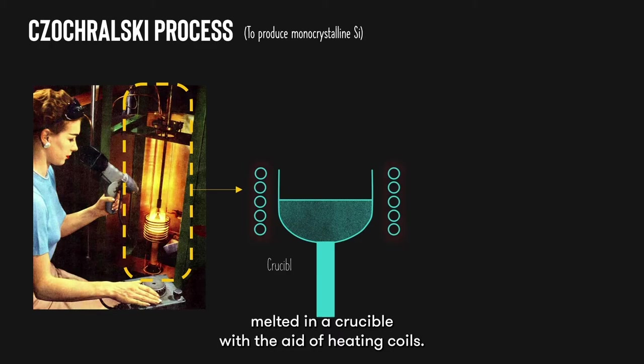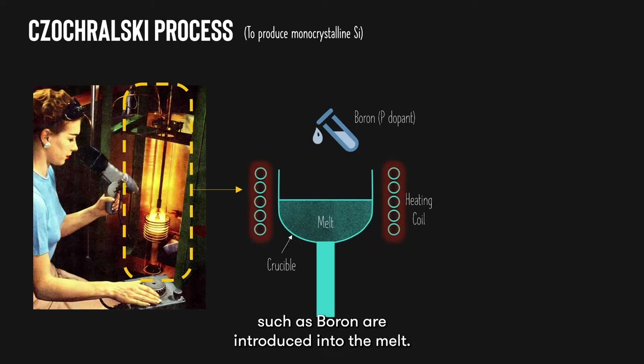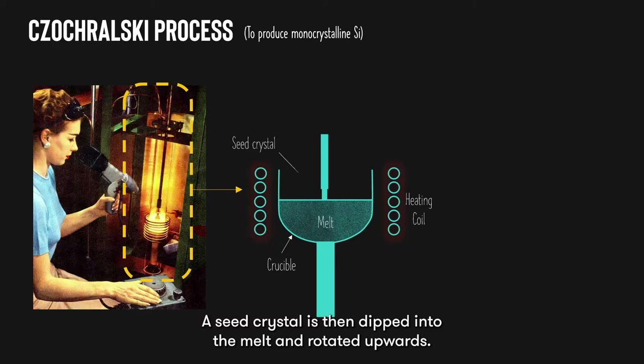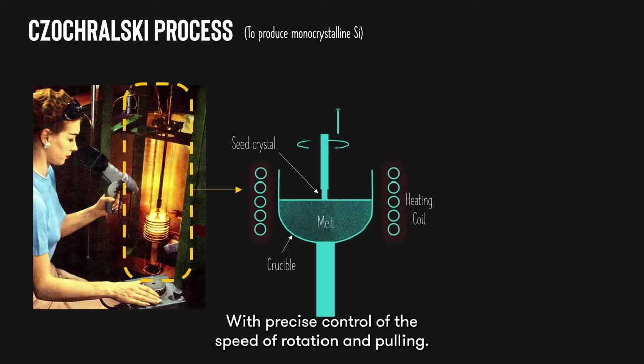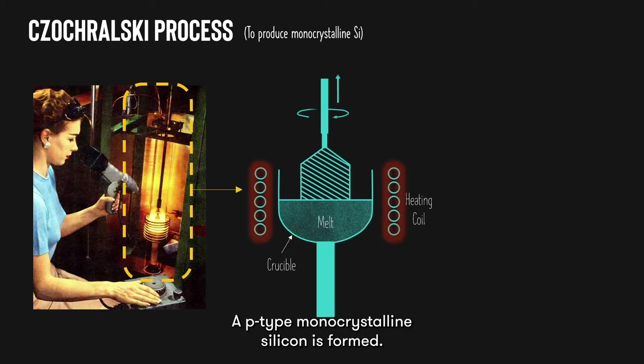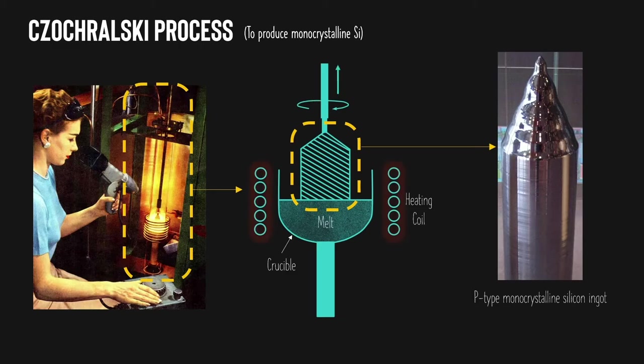In the Czochralski process, solar-grade silicon is first melted in a crucible with the aid of heating coils. At this point, p-type dopants such as boron are introduced into the melt. A seed crystal is then dipped into the melt and rotated upwards. The melt crystallizes at the seed crystal, and with precise control of the speed and rotation of pulling, a p-type monocrystalline silicon ingot is formed.